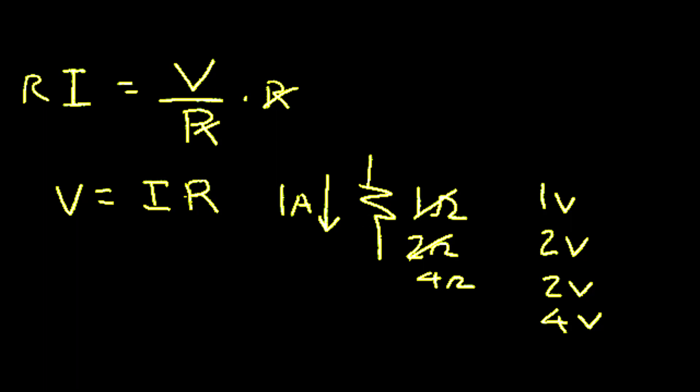Now we can take this equation and we can solve for the resistance. If we divide both sides by current we get resistance is equal to voltage divided by current.